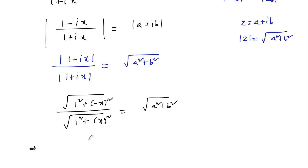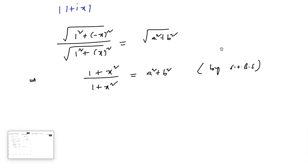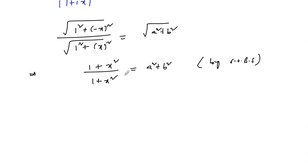Squaring on both sides: 1 square is 1, plus x square upon 1 plus x square equals a square plus b square. So 1 plus x square and 1 plus x square get cancelled.